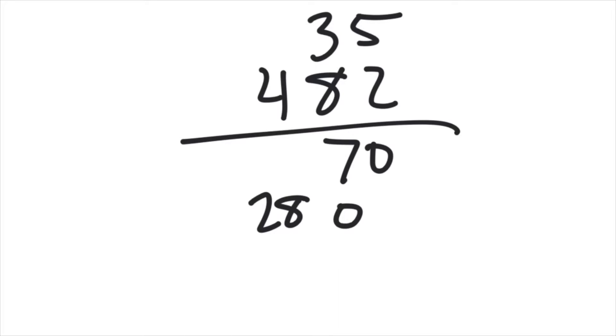At the bottom, this first number is 35 times 2. In the next one, one digit to the left is 35 times 8. And then the last one is 35 times 4.